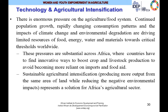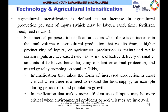While there is an increasing push to adopt technology on the African continent, we should also cater for agricultural intensification — more output from less input use. Agricultural intensification is defined as an increase in agricultural production per unit of inputs, which may be labor, land, time, fertilizer, seeds, feed, or cash. For practical purposes, intensification occurs when there is an increase in total volume of agricultural production resulting from higher productivity of inputs, or when agricultural production is maintained while certain inputs are decreased. Intensification is most critical when there is a need to expand food supply, for example during periods of rapid population growth.